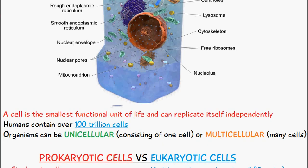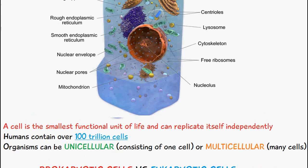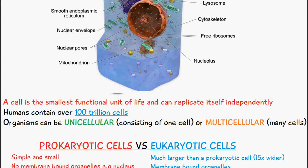So what actually is a cell? A cell is the smallest functional unit of life and it can replicate itself independently. Humans contain over a hundred trillion cells, and organisms can either be unicellular, which means they consist of just one cell, or multicellular, which means they consist of many cells. An example of a unicellular organism is bacteria, and a multicellular organism can be, for example, a human. Cells are considered the building blocks of life — they contain DNA and replicate themselves independently.